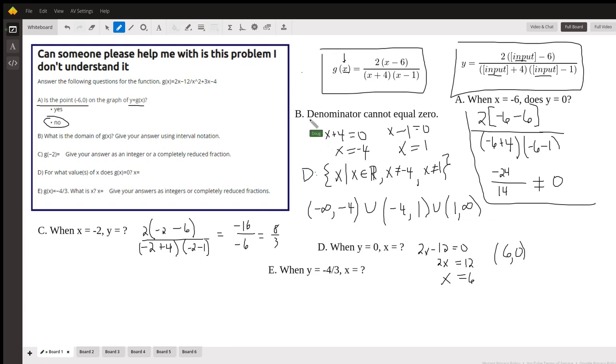For part b, when it asks for the domain, the domain of a rational function involves the fact that you cannot divide by 0. So I've written this function in factored form over here. This denominator will equal 0 when x plus 4 equals 0 or x minus 1 equals 0. And that's when x equals negative 4 or x equals 1.